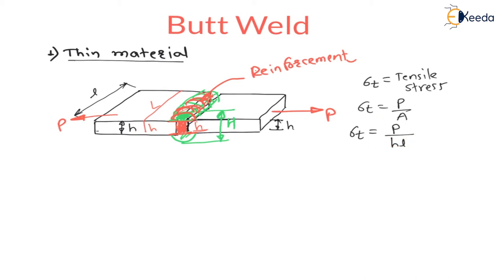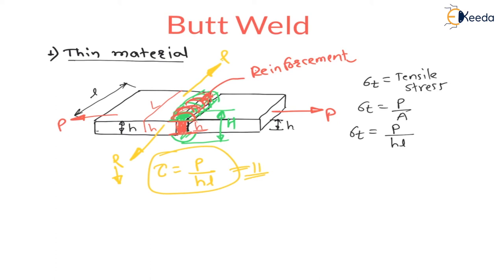Now let us consider the case where the applied load is parallel to the plate. For parallel loads there will be a shear stress, because the load is parallel to the weld surface. The shear stress equals force divided by the shear area, and again the shear area is the same: h into l. In summary: perpendicular load gives normal or tensile stress; parallel load gives shear stress.